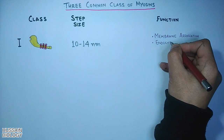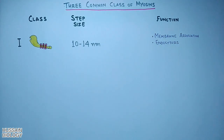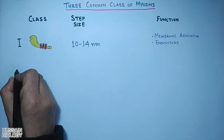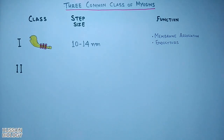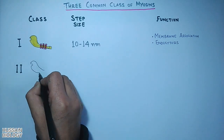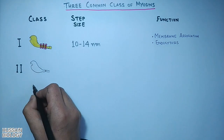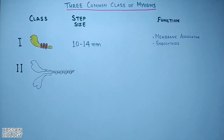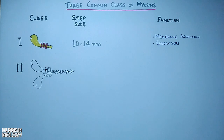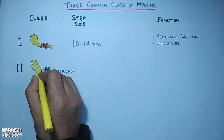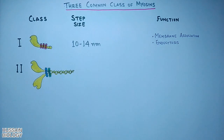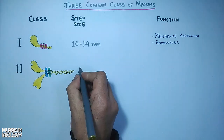Then we have class 2 myosins. These molecules have two head domains, as shown in the diagram, and we also have two light chains per neck. These are the only class that can assemble into bipolar filaments.